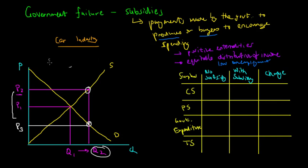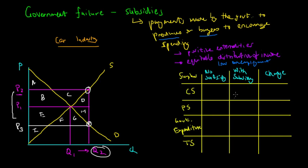Now we can use the welfare analysis, or cost-benefit analysis, that we've been using throughout this series of lectures. We're going to label all the different surplus areas: A, B, C, D, E, F, G, H, and I. Now that we've labelled everything, we can start seeing how a subsidy can affect the overall allocative efficiency of a nation.